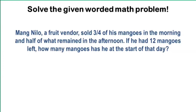solve the given problem. Mang Nilo, a fruit vendor, sold three-fourths of his mangoes in the morning and half of what remained in the afternoon. If he had 12 mangoes left, how many mangoes had he at the start of that day?